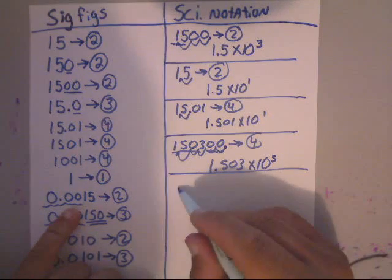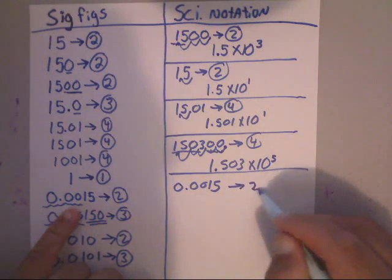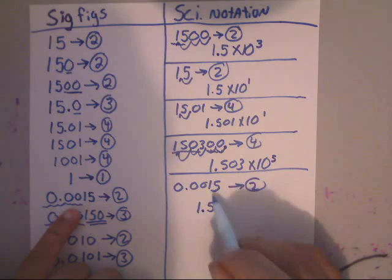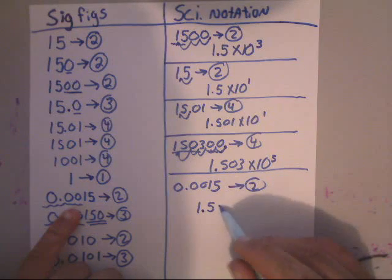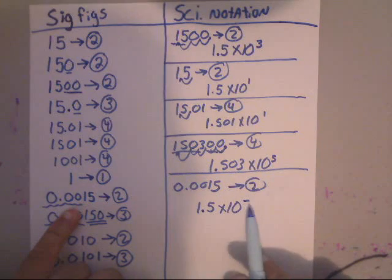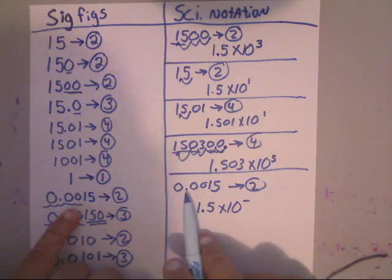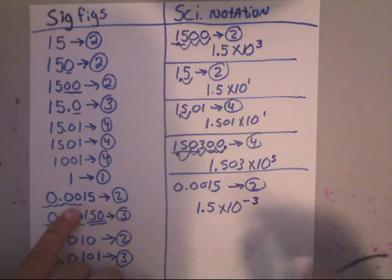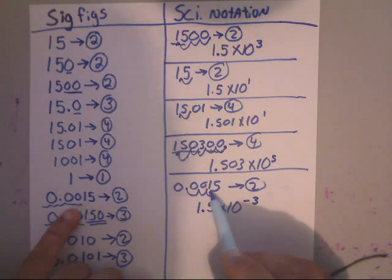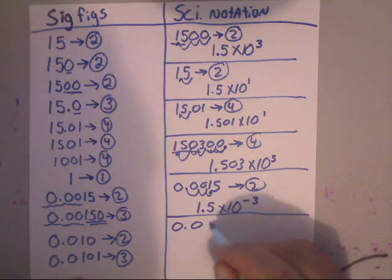Now let's look at some small ones. This one was 0.0015 — that is two sig figs. The 1 and the 5 are important. Put the decimal between the first two significant numbers and write times 10. Since it's a small number, it's a negative power. The easiest way to get this: as long as there's a zero in front of the decimal, just count the number of zeros — that's 1, 2, 3 — so that would be negative 3. Or if you want to see it done properly, you swing the decimal 1, 2, 3 times — that's why it's negative 3.